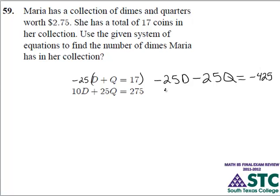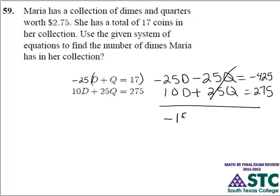And we would then add this to our second row, just like so. Now in this case, we would eliminate the number of quarters. So we would have negative 15D, since negative 25 plus 10 is negative 15.